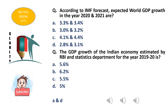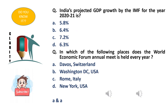The GDP growth of the Indian economy estimated by the RBI and the Statistics Department of the Indian government for the year 2019-20 is: option A - 5.6%, option B - 6.2%, option C - 5.5%, option D - 5%. The RBI and the Statistics Department of the Indian government have projected India's economic growth. The right answer is option D - 5%.